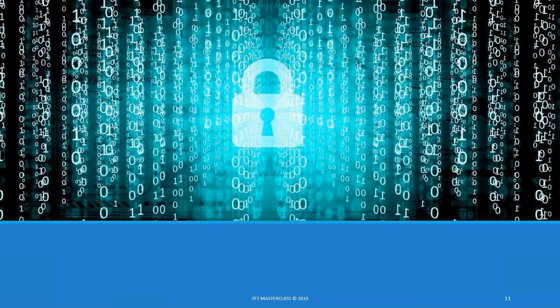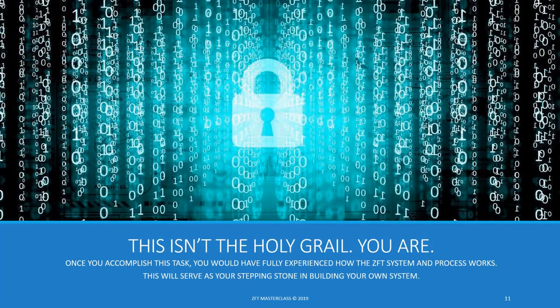For Fibonacci, we want to be in the bull zone — the 23% or 38% fib. For RSI, we want greater than 70 or between 50–70, and we also want an RSI breakout. Using this as a filter will show you wonders. Remember, trading has no holy grail — the holy grail is YOU. Once you complete this task, you'll have fully experienced how the ZFT system works, and it will serve as your foundation for building your own system.